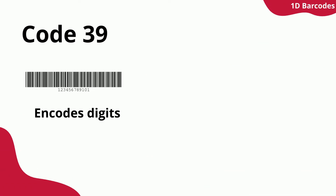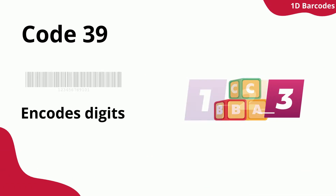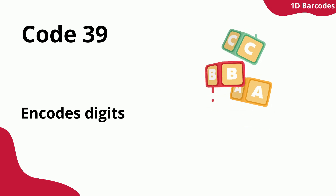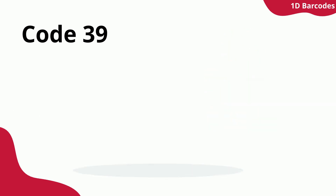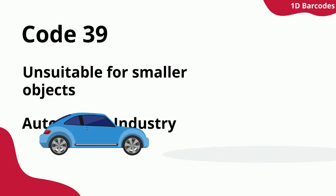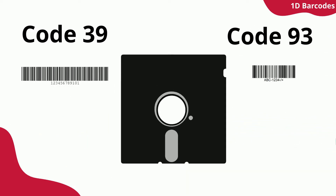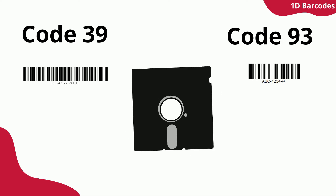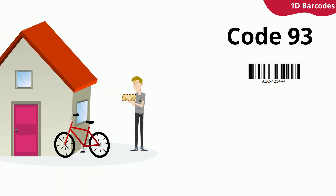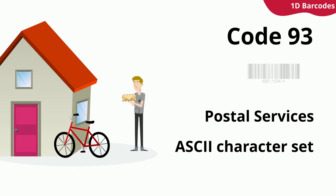Code 39 encodes only digits, uppercase alphabetical characters, and some special characters. The low data density makes it unsuitable for tiny items, with frequent use cases in the automotive industry. Code 93 is a compact version of Code 39. Its main users are postal services companies, which encode delivery information within it.